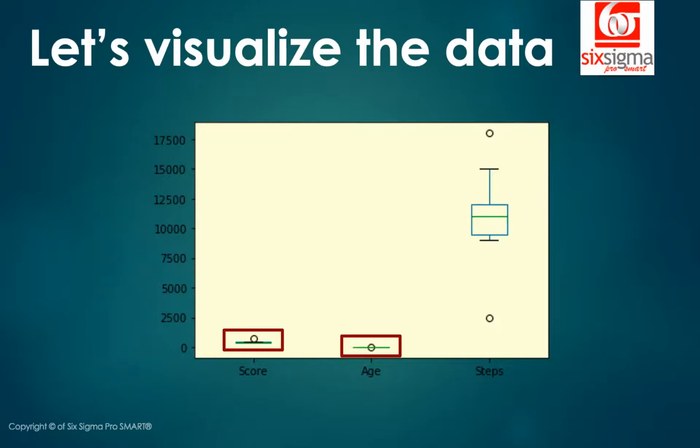Score and age, which we individually looked at some time back while discussing outliers, had proper box plots which are not even visible here. And why is that so? Because their scale was very limited. Score was below 800 all the times, that was the maximum possible value. And age was ranging between 15 to, say, a 37. Now, that's the reason these values are so small compared to the values taken by steps that these box plots have almost been compressed to straight lines here.